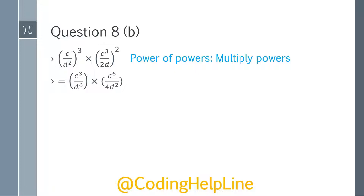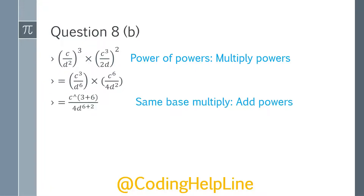Here we have c³ multiplied by 2, so it becomes c⁶, and 2 squared becomes 4, and d². Now we will multiply the corresponding terms using the same-base multiplication rule — powers become addition. So it becomes c power 3 plus 6. And here we will have 4 because there is no coefficient, so it stays 4. And d⁶ multiplied by d² becomes d power 6 plus 2. After simplification, this becomes c⁹ and 4d⁸. That is the answer for question 8b.